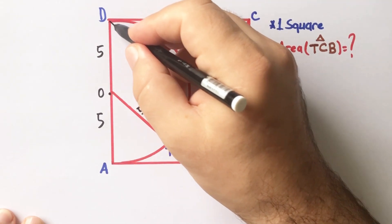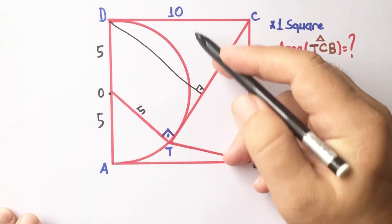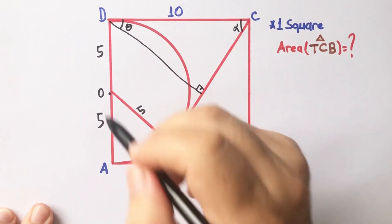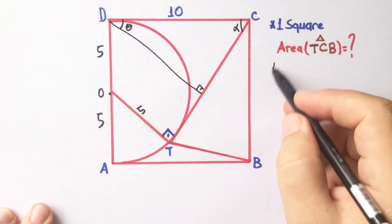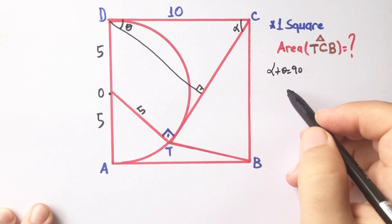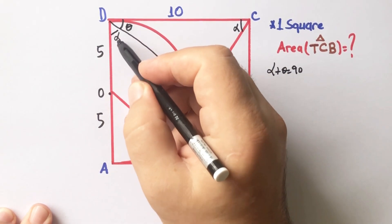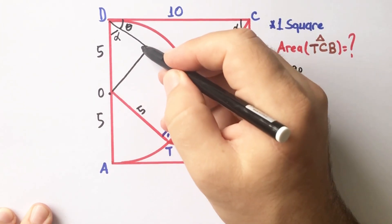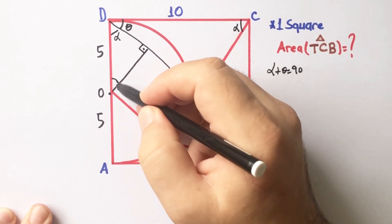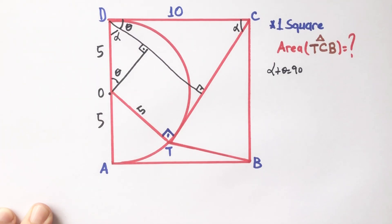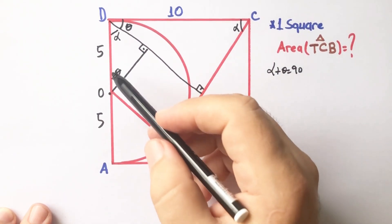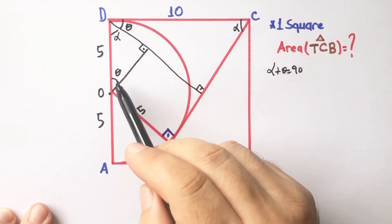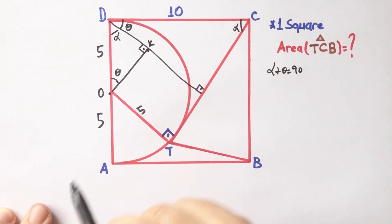If we draw a perpendicular line opposite the 10-unit side, let's call this angle alpha and this angle theta. Alpha plus theta equals 90 degrees, which means this angle must be alpha. If we draw another perpendicular line, this angle must be theta. Notice that we get two similar triangles — let's call this point K.